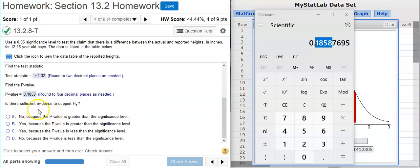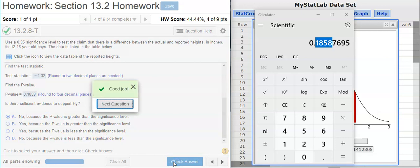And now the last part asks, is there sufficient evidence to support H₁? Well, supporting H₁ or the alternative hypothesis is the same thing as rejecting the null hypothesis. Can we reject the null hypothesis? Well, we've got a p-value of almost 19%. It's well above our significance level of 5%, so we're outside the region of rejection. We fail to reject the null hypothesis and therefore we fail to support the alternative hypothesis. Good job.